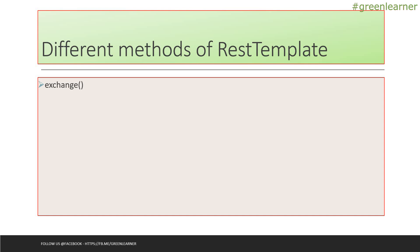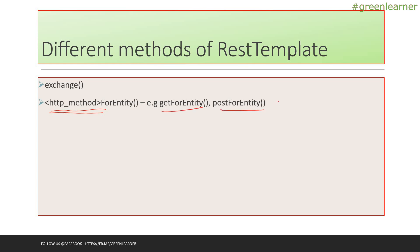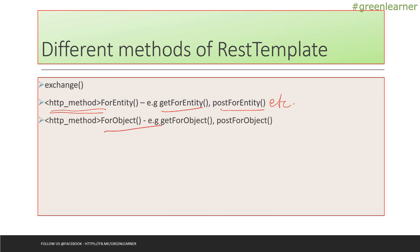The second set of methods are HTTP method for entity — they go like getForEntity, postForEntity, putForEntity, and others. The third set is getForObject, postForObject, putForObject, and so on. These are the sets of methods that we use. We will see these one by one. First, we are going to look at the exchange method. Let's go ahead and move to the demo part where we will understand more.